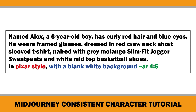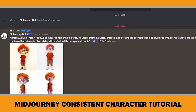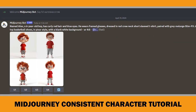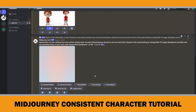Firstly, I needed to create our main character, Alex. I added all details about Alex and I wanted him in Pixar style. When creating characters, a white background works better. The dash-dash AR parameter changes the aspect ratio of the generated image — you can change it according to your needs. Midjourney generated several options, and I really liked the top right character: it had a red cream neck t-shirt, grey melange joggers, and white shoes. So I decided to use that one and upscaled it.